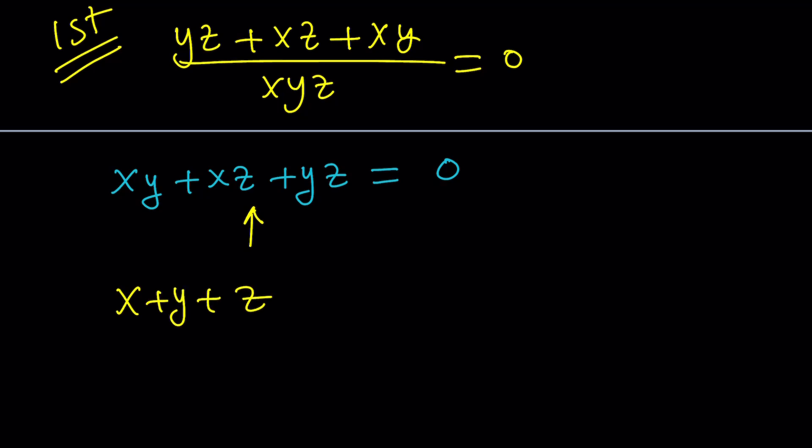If we square x plus y plus z, then we get x squared plus y squared plus z squared plus 2 times the quantity xy plus xz plus yz.